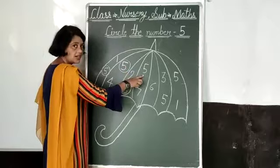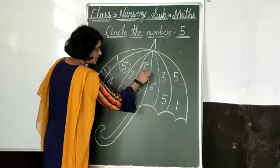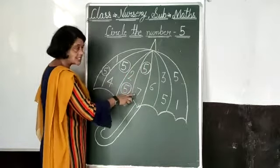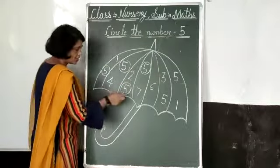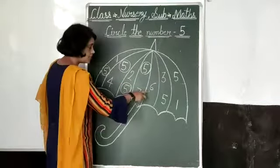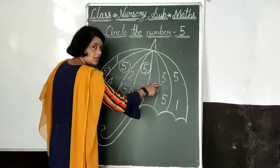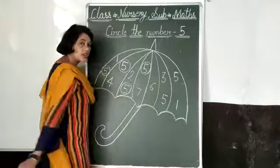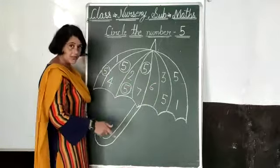This number 7 — not circle this number, only 5 numbers we circle. We have 5 numbers, circle this number. This number 6 — not circle this number. This number 3 — not circle this number.